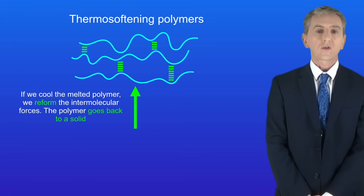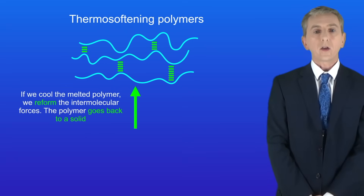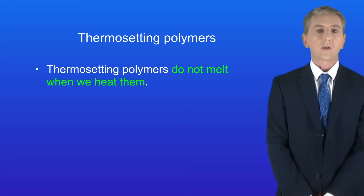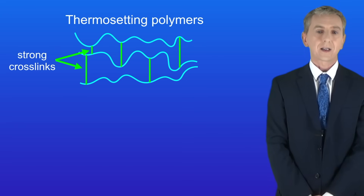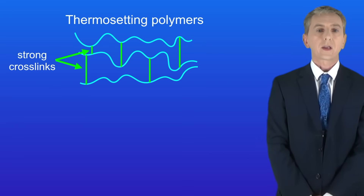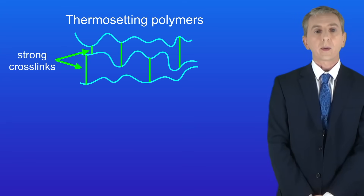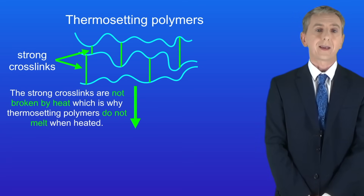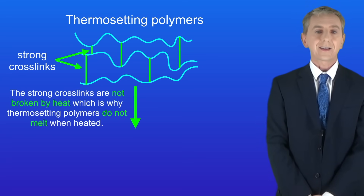So as we've seen, thermosoftening polymers melt when we heat them. Another group of polymers are called thermosetting. Thermosetting polymers do not melt when we heat them. The key feature of thermosetting polymers is that the polymer chains are connected to each other by strong crosslinks. These strong crosslinks are not broken by heat, and that's why thermosetting polymers do not melt when heated.